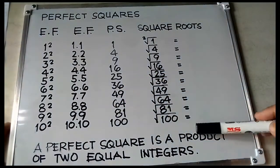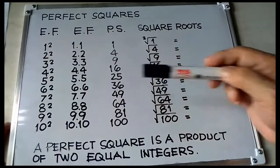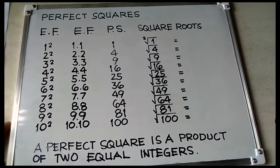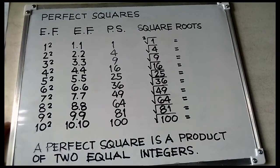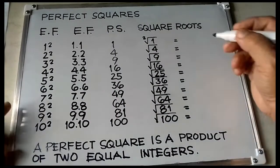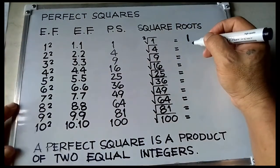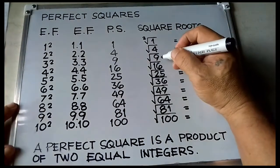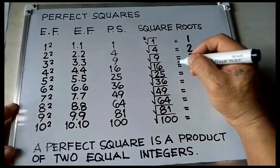A perfect square is a product of 2 equal integers. From 1 to 100, I gave 10 examples to make it easier to understand. So let's get the square roots: the square root of 1 is 1, square root of 4 is 2, square root of 9 is 3, square root of 16 is 4.